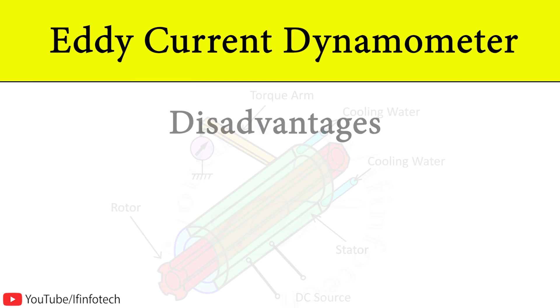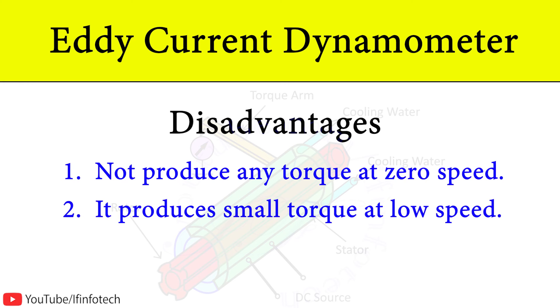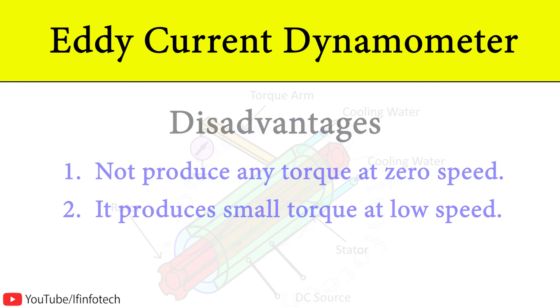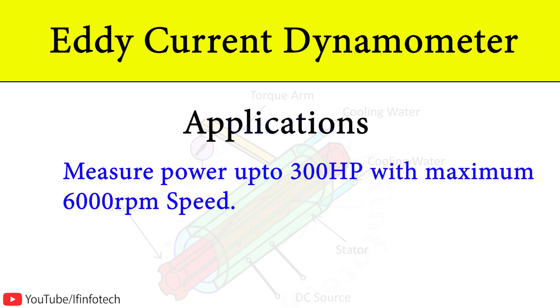The eddy current dynamometer cannot produce any torque at zero speed, and the torque produced is small at low speed. The eddy current dynamometer can measure power up to 300 hp with a maximum speed of 6000 rpm.